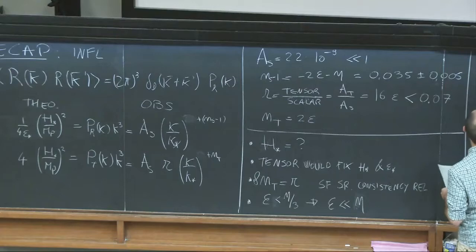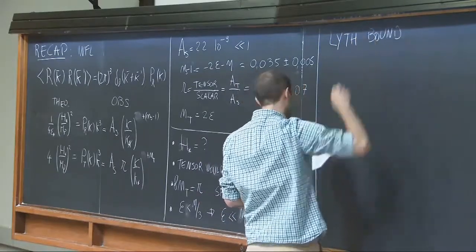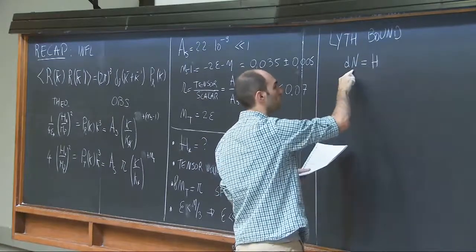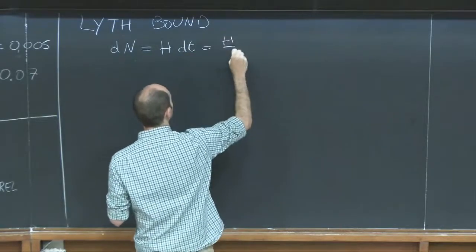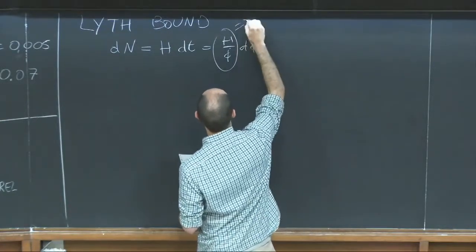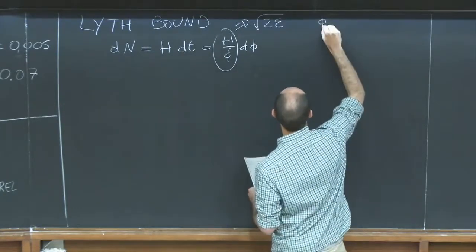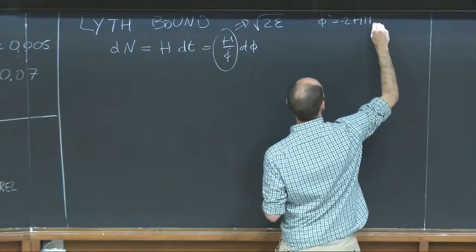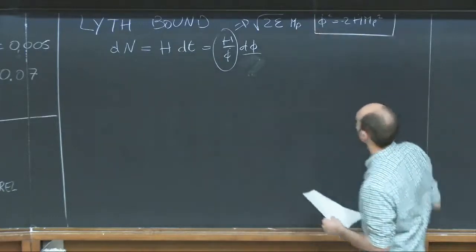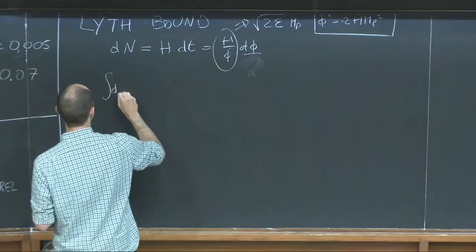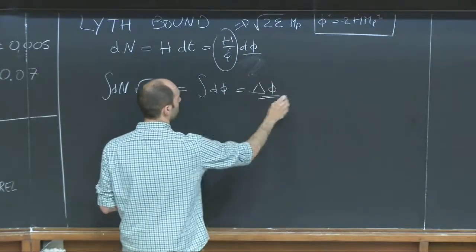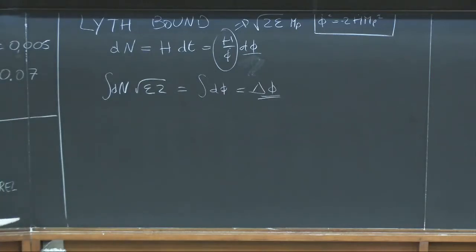Maybe the last thing to mention is the Lyth bound. How long is inflation? The number of e-foldings is the integral of H dt, which I can rewrite using the chain rule as an integral in d-phi. The quantity H divided by phi-dot is the square root of 2 epsilon, because phi-dot squared equals minus 2 H-dot M_Planck squared. So I can rewrite this as the integral in dN of square root of 2 epsilon equals the displacement of the inflaton during inflation.